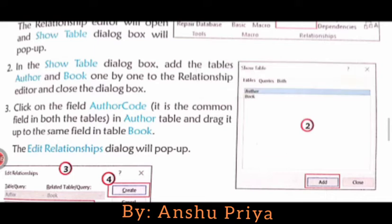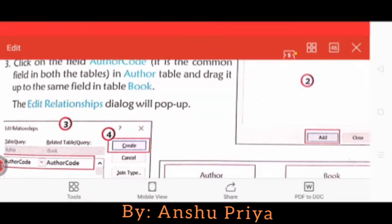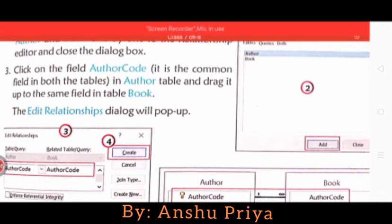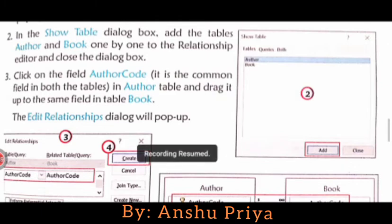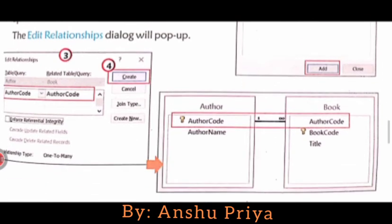Click on the field Author Code — which is a common field in both tables, Author and Book — and drag it to the same field in the Book table. You will drop the Author Code from the Author table onto the Book table. The Edit Relationships dialog box will pop up. You can see this is the Edit Relationships dialog box.